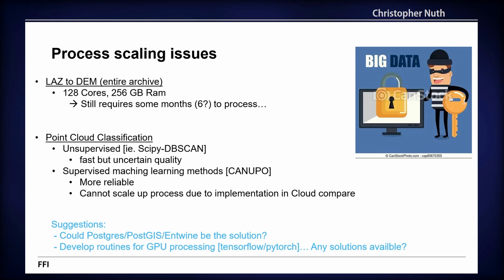We had major issues scaling when trying to run this on 13,000 projects — probably consisting of about 50,000 files. With a big server and lots of RAM, it still took six months to process. The unsupervised classification was really cool and fast, but we wanted something supervised and couldn't scale up what was built into Cloud Compare. I'm wondering if I should be using PostgreSQL, PostGIS, and Dask, and also developing routines for GPU processing with TensorFlow or PyTorch — that might speed things up. Any suggestions welcome.